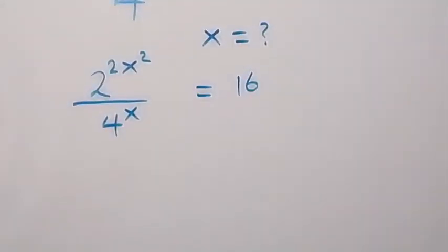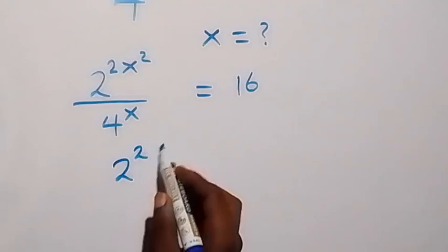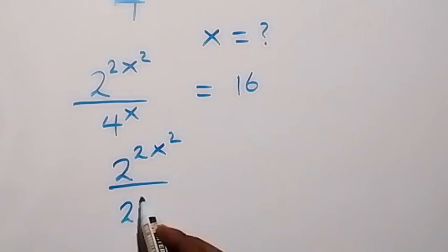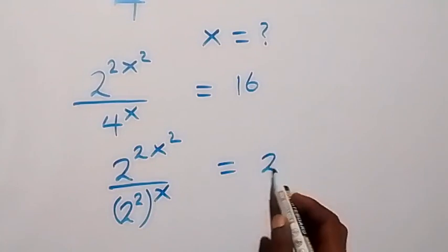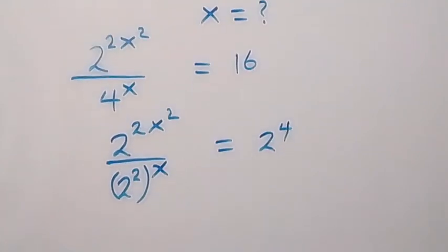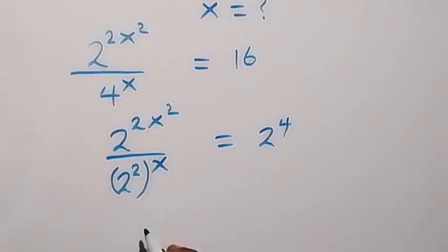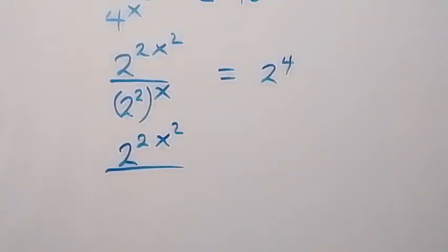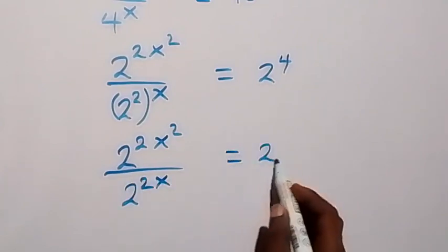Let's convert everything to base 2. We have 2 raised to power 2x squared. Then 4 can be written as 2 raised to power 2, raised to power x. And 16 can be written as 2 raised to power 4. Applying the law of indices, this power multiplies, giving 2 raised to power 2x squared over 2 raised to power 2x, equals 2 raised to power 4.